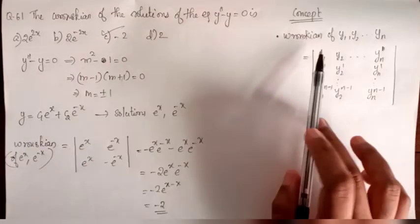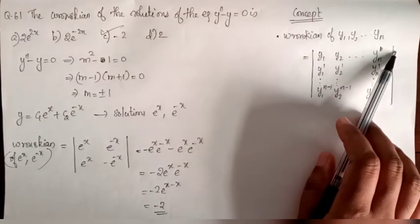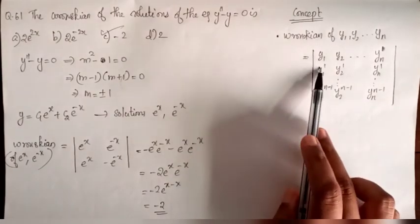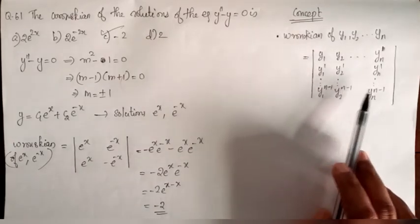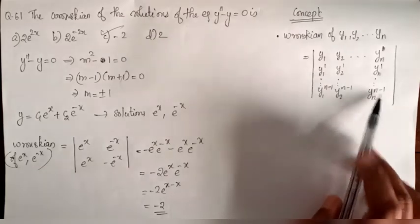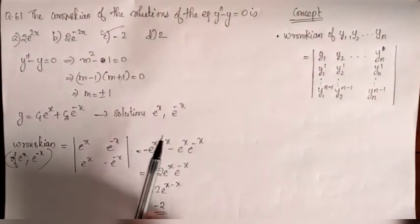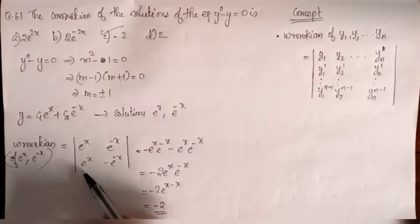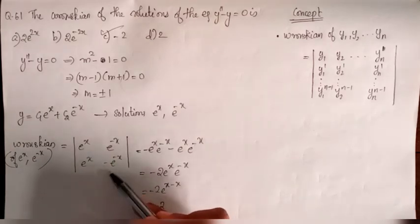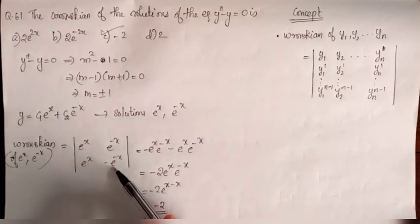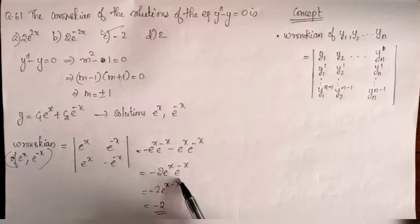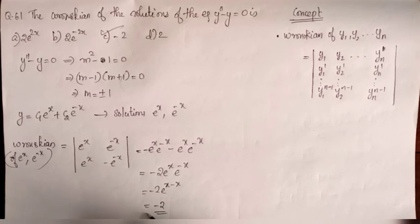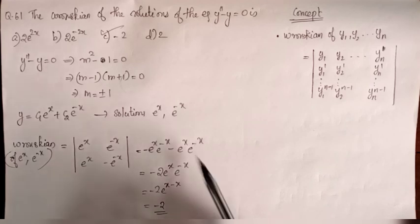The Wronskian W(y₁, y₂) is the determinant of the matrix [y₁, y₂; y₁', y₂']. With y₁ = e^x and y₂ = e^(-x), the derivative of e^x is e^x and the derivative of e^(-x) is -e^(-x). So the Wronskian equals e^x·(-e^(-x)) - e^(-x)·e^x = -2e^0 = -2. Option C is correct.